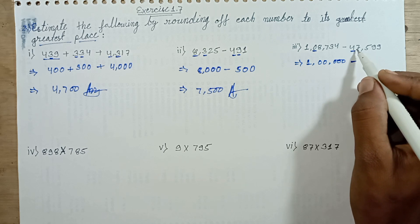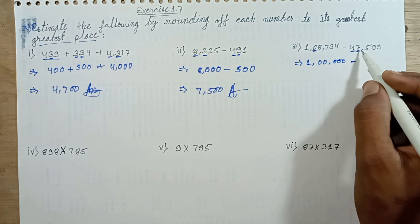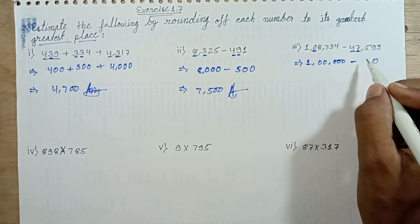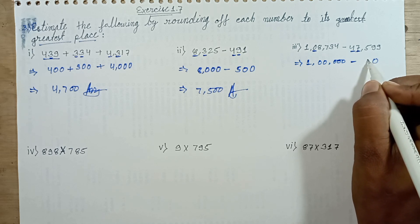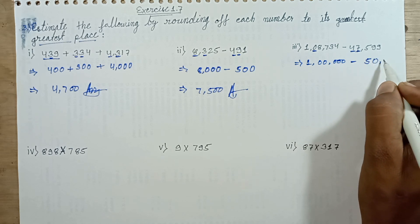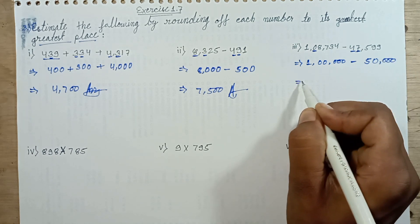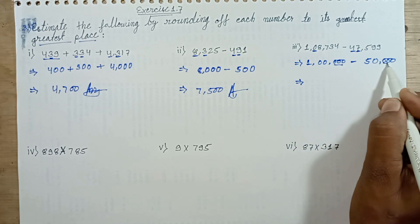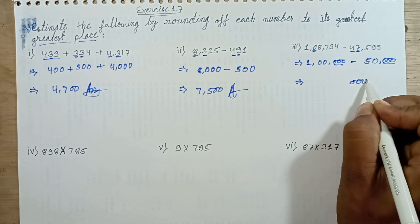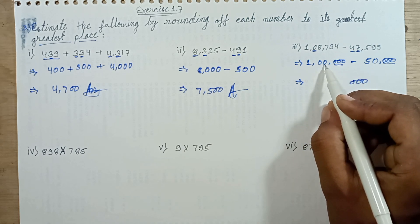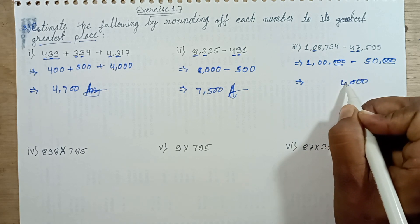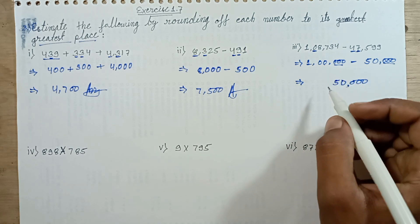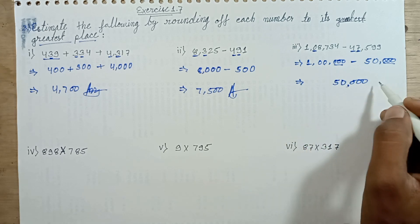The number 7 is in the thousands place. 7 is greater than 5, so 7 is replaced with 0 and the ten-thousands digit increases by 1 — 4 plus 1 is 5. The remaining digits are replaced with 0. Subtracting: 0 subtract 0 comes out 0. 10 subtract 5 comes out 5. This is my answer.